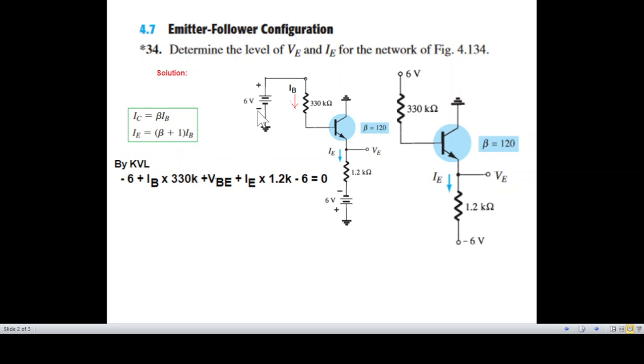So minus six, we're going from here. So minus six, IB into 330K, plus we have VBE here. VBE which is 0.7 volt generally. And then we have IE into 1.2K and then minus six equal to zero.